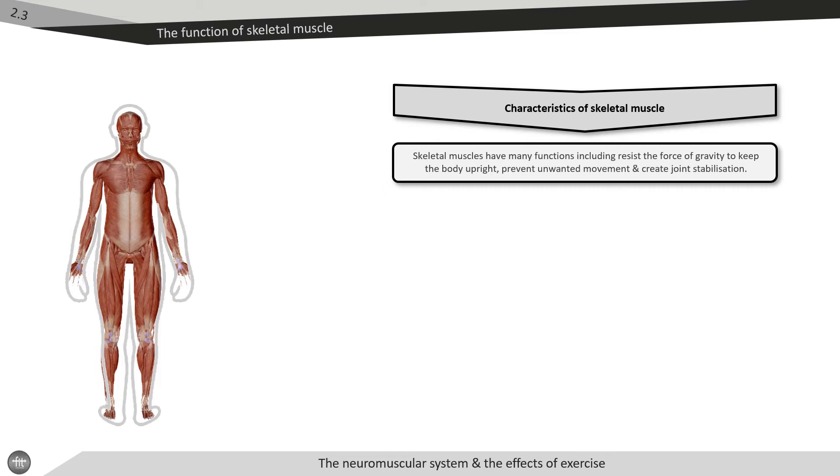Skeletal muscles work in pairs resisting the force of gravity to keep the body upright. They prevent excess and unwanted movement, protect the skeletal system, and assist the ligaments to stabilize the joints. These functions are possible due to the four characteristics of skeletal muscle.